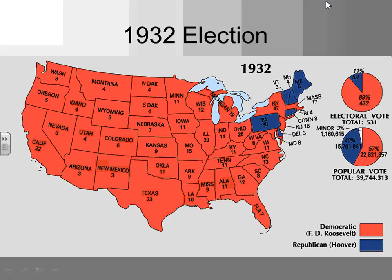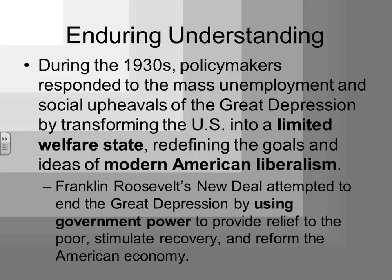The 1932 election results — despite how much people didn't like Hoover, he still gets 40% of the popular vote, carrying Pennsylvania. It's a fairly solid landslide, largely not so much that people love Roosevelt but more of a 'not Hoover' vote. These enduring understandings in the slides come directly out of the College Board curriculum, and there are a couple of terms to be familiar with.